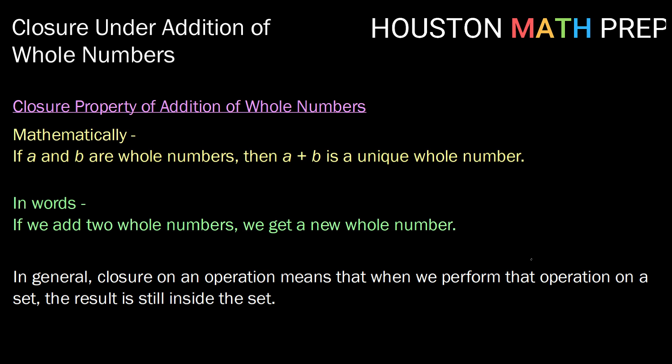In this video, we're going to look at some examples of closure under addition when it comes to whole numbers. So let's remember what that closure property for the addition of whole numbers says. It says that if A and B are whole numbers, then A plus B is a unique whole number.